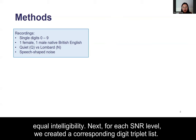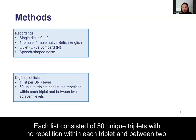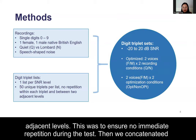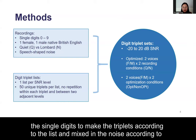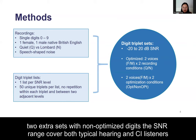For each SNR level, we created a corresponding digit triplet list. Each list consists of 50 unique triplets with no repetition within each triplet and between two adjacent levels, to ensure no immediate repetition during the test. We then concatenated the single digits to make the triplets and mixed in the noise according to the corresponding SNR level. We made four sets of digit triplets from optimized digits and two extra sets with non-optimized digits. The SNR range covered both typical hearing and CI listeners.